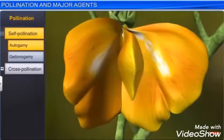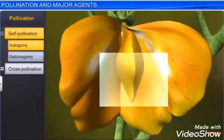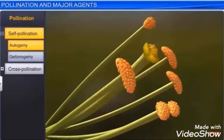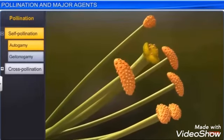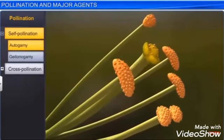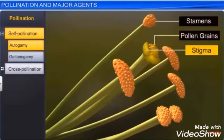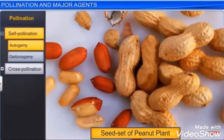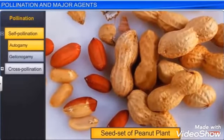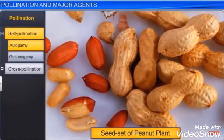The second type of self-pollination is geitonogamy. In geitonogamous pollination, pollen grains come from the anther and rest on the stigma, resulting in seed formation.